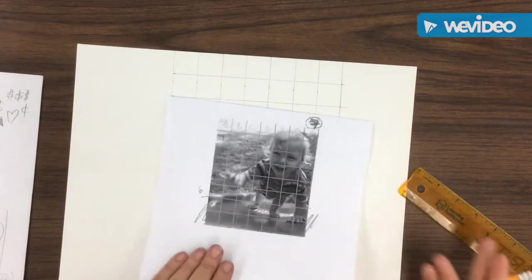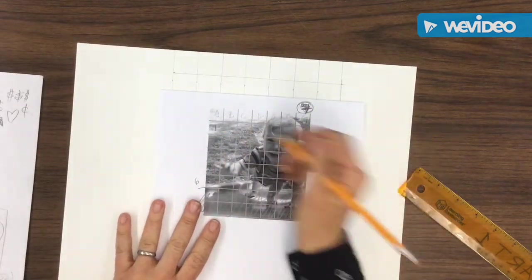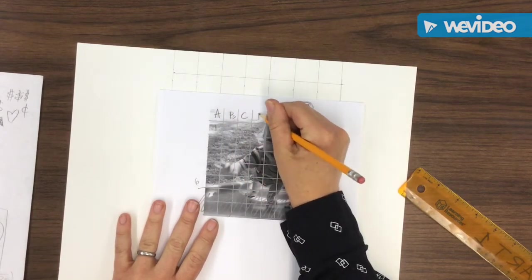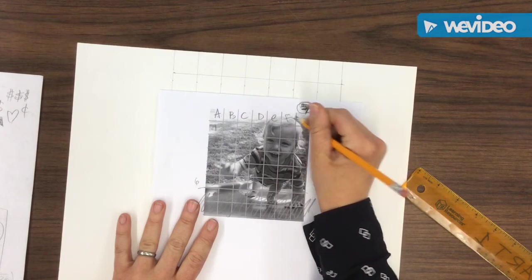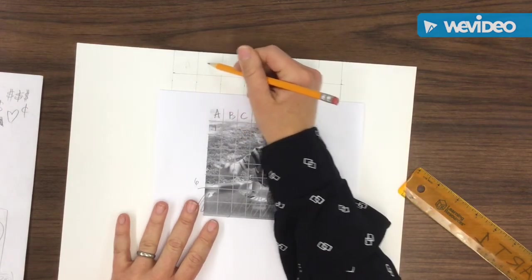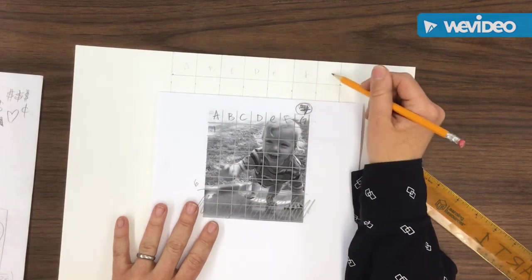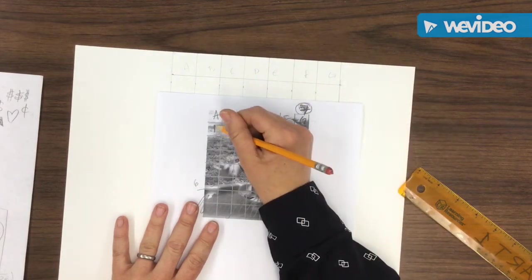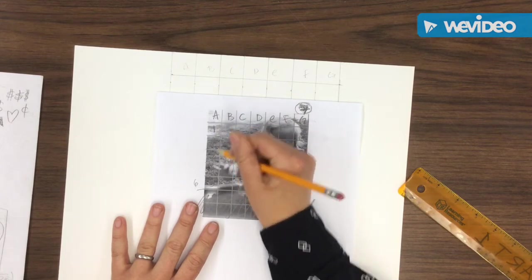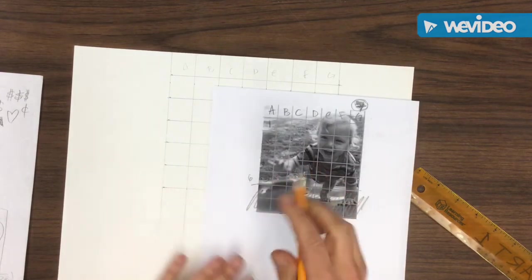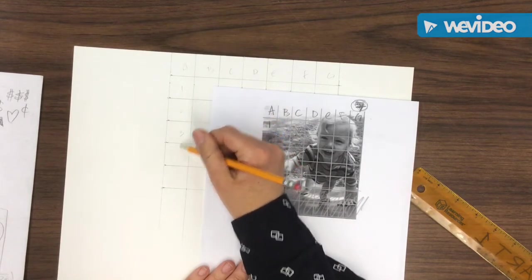Actually, the next step is to label your grids, both of them, with letters and numbers. So A, B, C, D, E, F, and G across the top. And then really lightly on your paper: A, B, C, D, E, F, G. And then you start numbers right below A, so one, two, three, four, five. And the same thing here, really light: one, two, three, four, five.